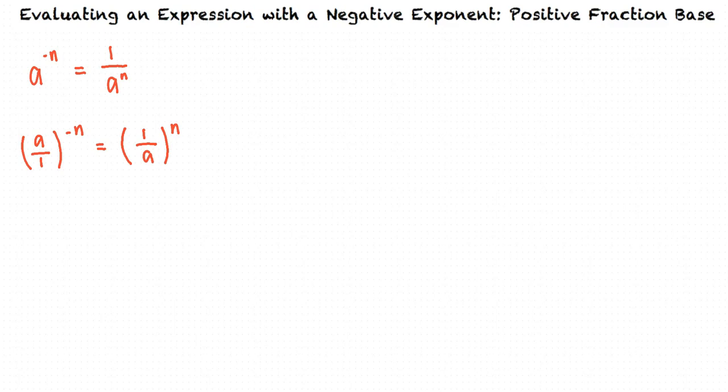Extending this rule even further, our denominator does not have to equal 1. As long as the fraction a over b is a non-zero rational number and n is a whole number, we have the following.